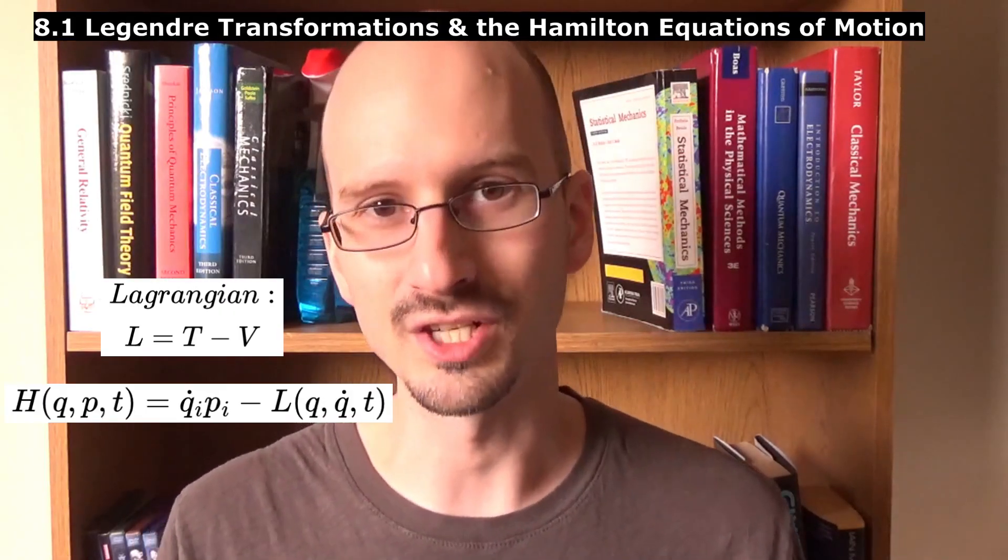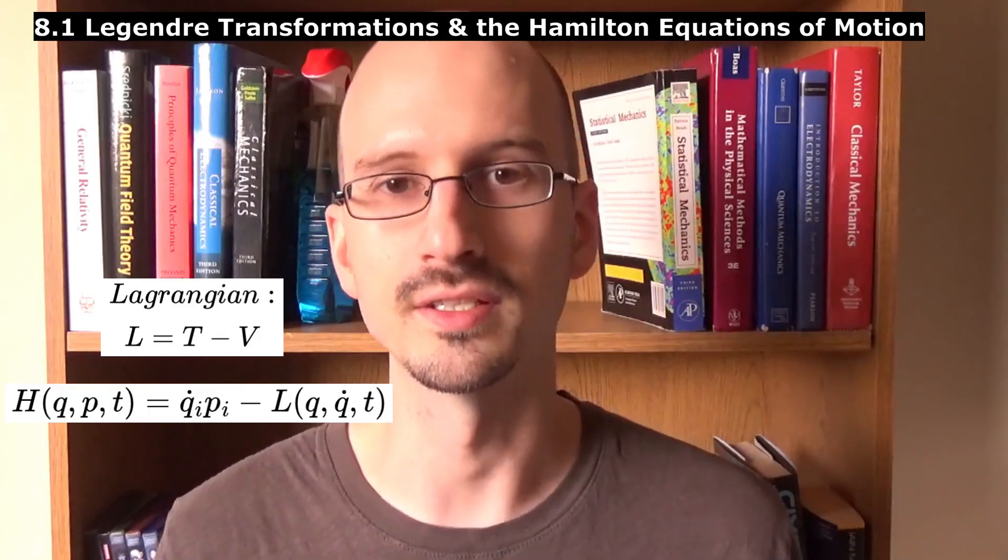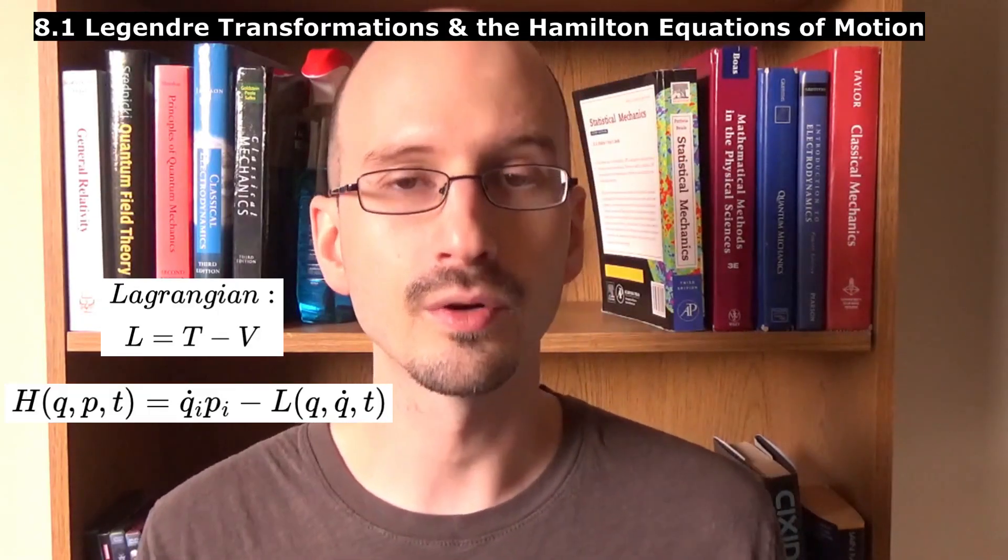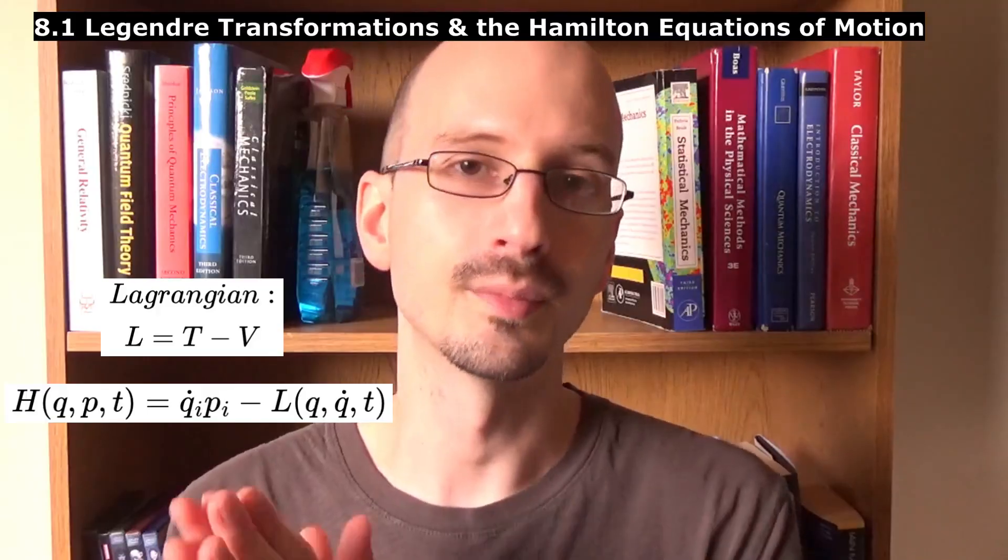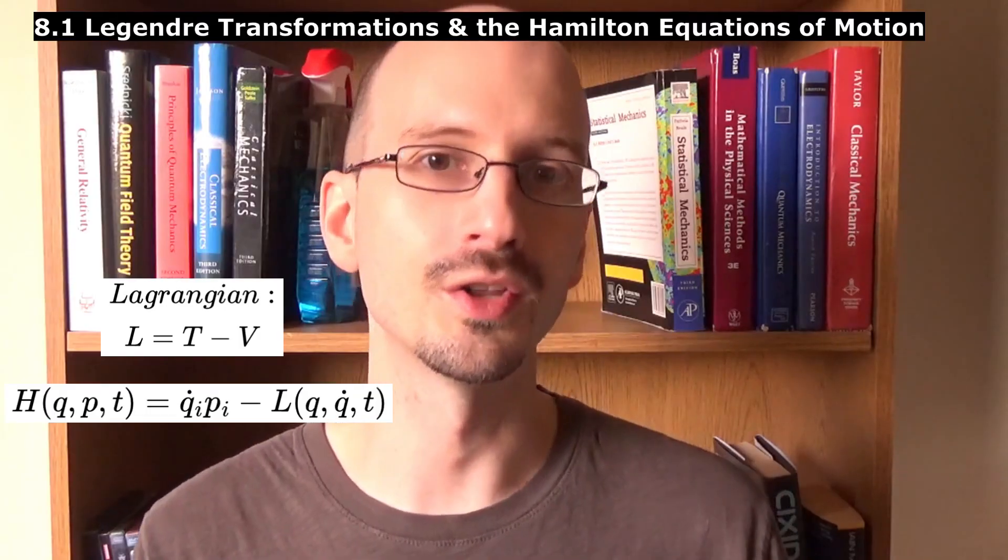And we can use something called a Legendre transformation, which the book goes into, but I'll spare you the details right now, to convert the Lagrangian into a function of positions, momenta, and time. This new function is called the Hamiltonian.